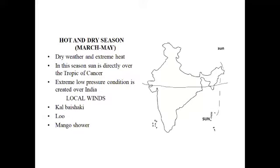Let us discuss the hot and dry season. It prevails from the month of March to May. The characteristics of this season are that it is marked by dry weather and extreme heat. We hardly get any rainfall in the months of March and May. In this season, the Sun is directly over the Tropic of Cancer.